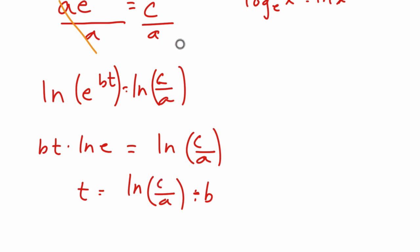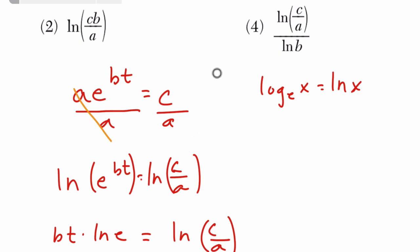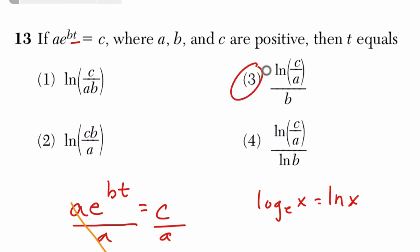Okay. So that just means that I think we have this choice here. It's in choice three. We have natural log of c over a, and then that divided by just b. All right, hope that helped.